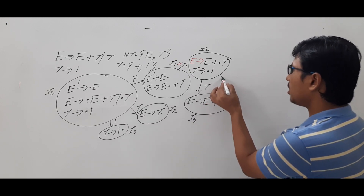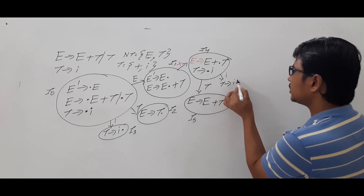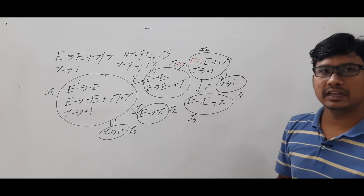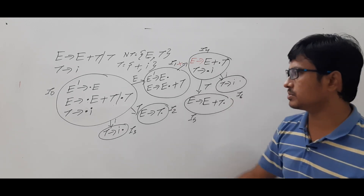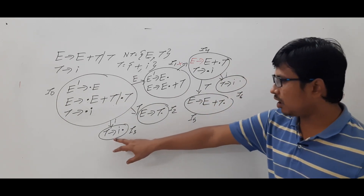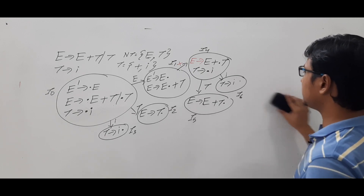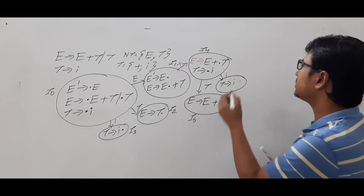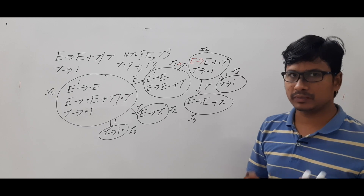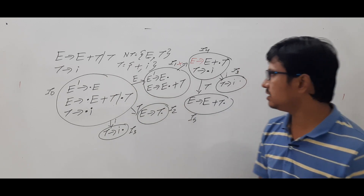On i from I₄, we get T → i•. Many people think this is a new item and write it as I₆, concluding there are seven items total. That is a mistake. We already have T → i• as item I₃. So instead of writing a new one, we just point back to I₃. This is not a new item; it is the old item. Totally we have only six items from this grammar.